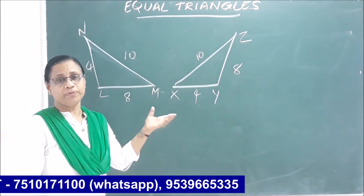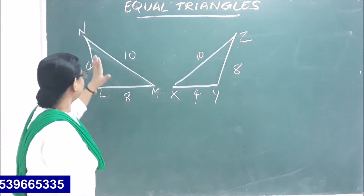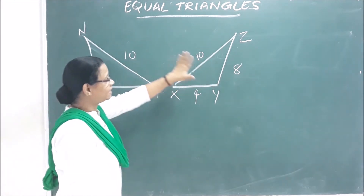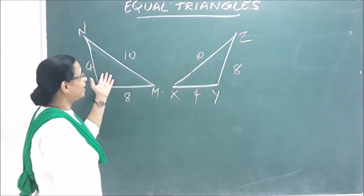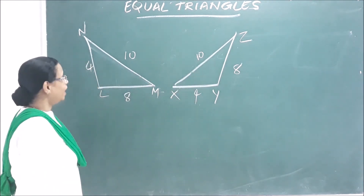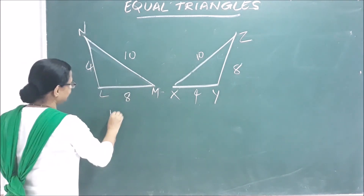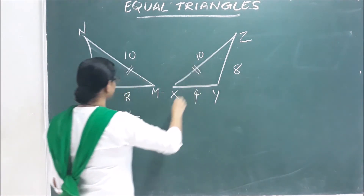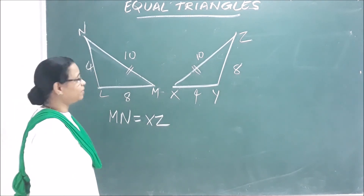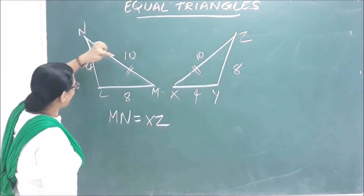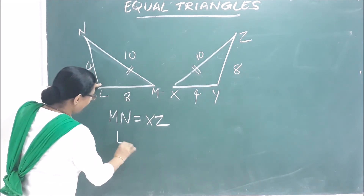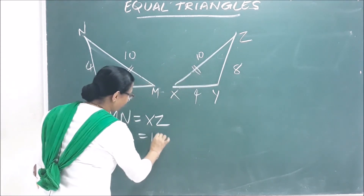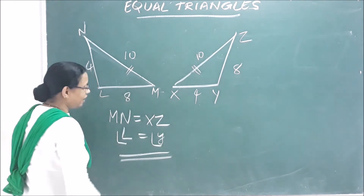Now let's go to the next question. This triangle is equal to another triangle. If we say this triangle is equal, then the angles are also equal. How is side M equal? M is equal to 10 cm. Then x, z and x, z are equal to X.